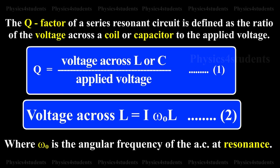Voltage across L is equal to I omega 0 L, where omega 0 is the angular frequency of the AC at resonance.